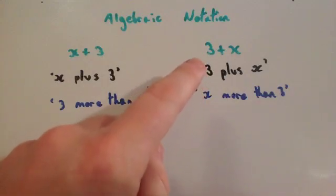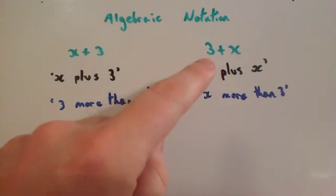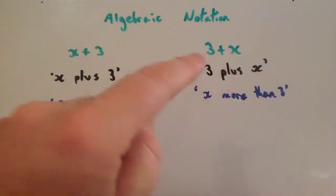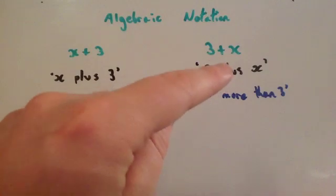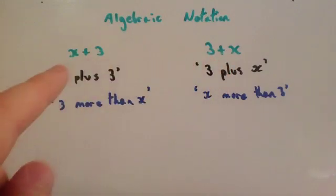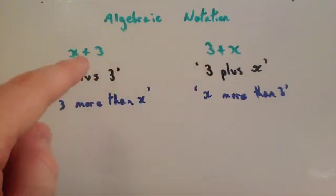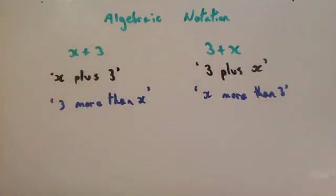I've turned it around and I've written 3 plus x. This would mean 3 plus x, or another way to look at it would be x more than 3. If you've got 3 and you add x to it, you'd have x more than 3.